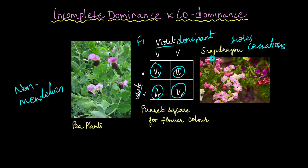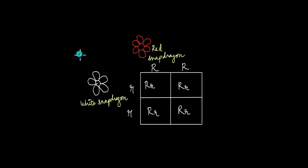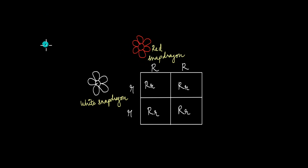What we're observing here with snapdragon is an example of incomplete dominance. After Mendel published his studies about dominance and inheritance, a lot of other scientists began working independently trying to replicate Mendel's results and add more to his work. One such scientist was working with a flower known as snapdragon, which belongs to the Antirrhinum species.